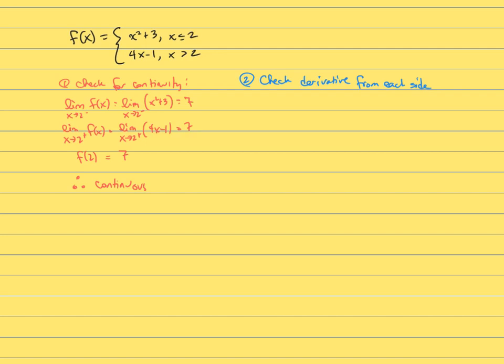Step two is to check the derivative from each side. So what we're going to do is write the definition of the derivative, and we're going to use the a definition this time. We could easily use the h definition. So I'm going to take the limit as x approaches two from the left. Now when I'm coming at two from the left, this uses x squared plus three, because that's the function where x is less than two.